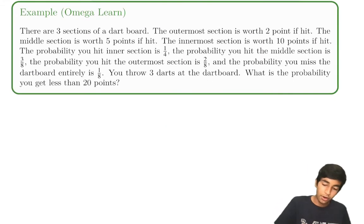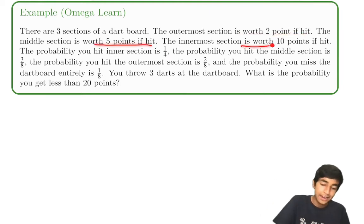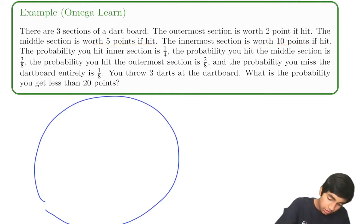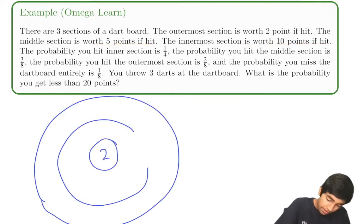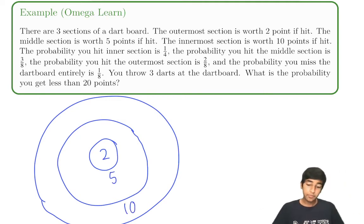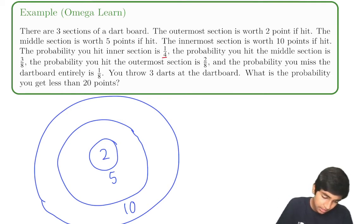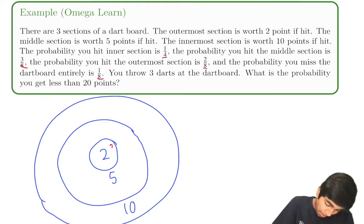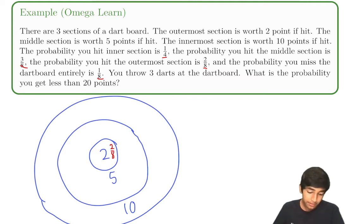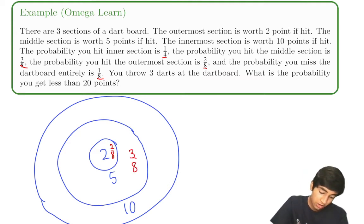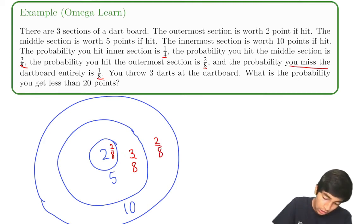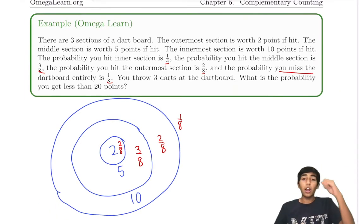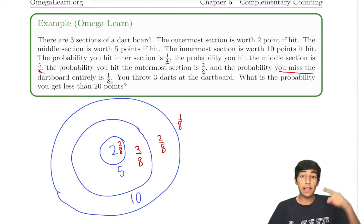There are three sections of a dartboard. The outermost section is worth two points, the middle section is worth five, and the innermost is worth ten. The probability of hitting the innermost section is two-eighths, the middle section is three-eighths, the outermost section is two-eighths, and you miss the dartboard entirely one-eighth. You throw three darts. What's the probability you get less than 20 points?